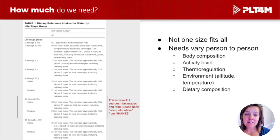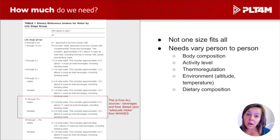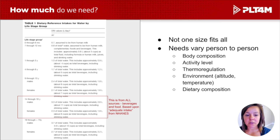It's theorized that the eight-glasses recommendation may have come from the idea that we need a milliliter of water for every calorie consumed. With a generalized 2,000-calorie target, that would be about 2,000 milliliters of water — 64 ounces, or eight eight-ounce glasses. But current experts think that might be more water than many people actually need. The recommendation now is to have four to six eight-ounce glasses per day, though fluid needs can vary a lot person to person.